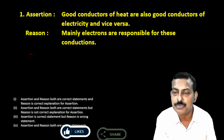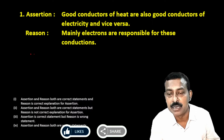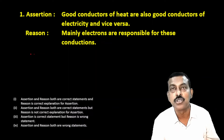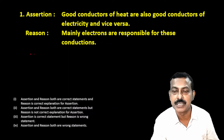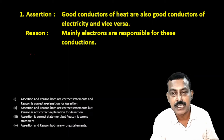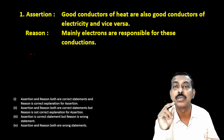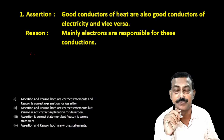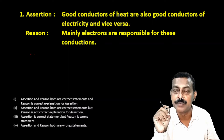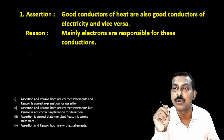Let's start with the first question. Before we start, we should go over the different options. The first option is: assertion and reason both are correct statements and reason is the correct explanation for assertion. The second is: both are correct but reason is not the correct explanation. Third: assertion is correct but reason is false. Fourth: assertion and reason both are wrong statements.